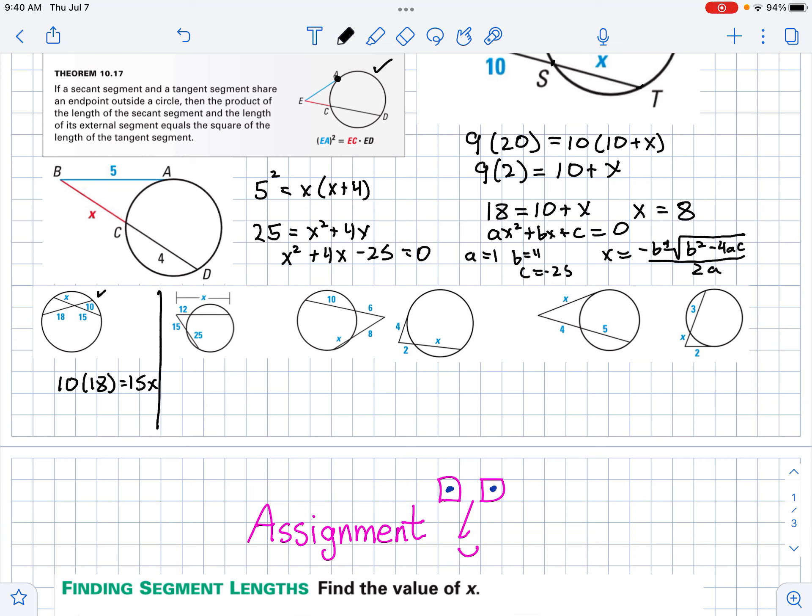Now let's look at this next one. We've got 15 times, now look what we've got, we've got 25 and 15, so the full length here would be 40. The outside length times the full length equals the outside length times the full length, and we would solve that.